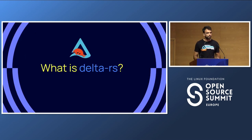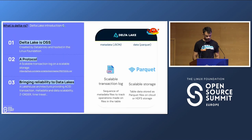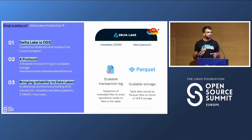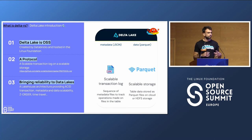Before getting into Python and Rust and the combination of both, I'd like to introduce what Delta Lake and Delta RS are. Delta Lake is an open source technology under the Linux Foundation, created by Databricks — the creators of Apache Spark. Basically, Delta Lake aims to provide reliability, performance, and quality on data lakes.